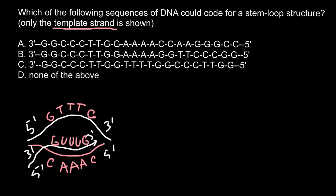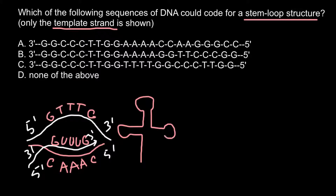Now let me explain what a stem loop structure is. We can see a stem loop structure on the example of tRNA. As you remember, tRNA has what we call three leaves and three stems. The stem portion is where bases pair with each other, and the loop portion is where they don't. For example, if we have G on one side of the stem, we would have C on the other side, because guanine base pairs with cytosine.